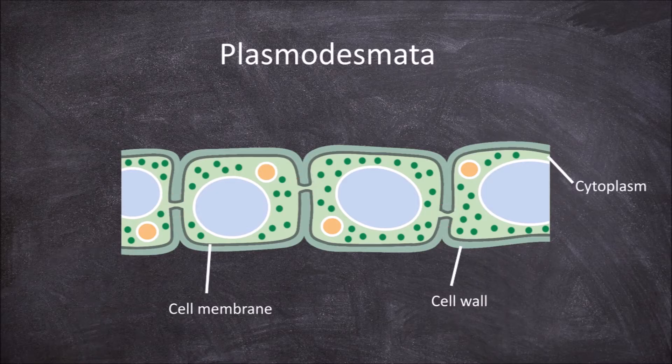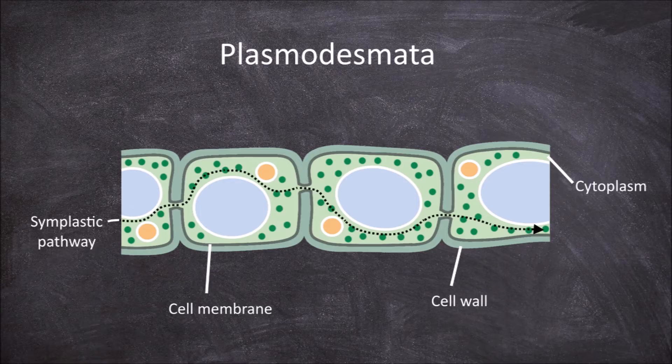Most cells in a plant are interconnected through the plasmodesmata. These connections form the symplast and the symplastic pathway, which is where materials are able to move between cells through the cytoplasm.